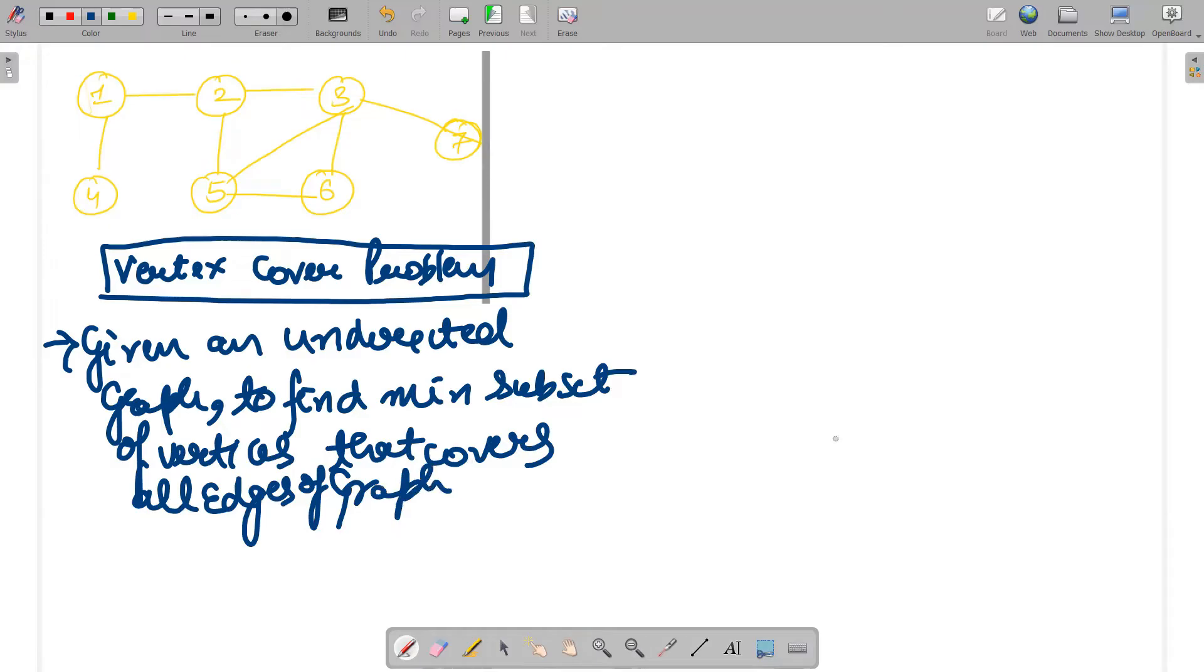So it means that what are the vertices which are contributing maximum in a graph? Let's say, if I talk about vertex 1, so 1 is connected to 2 as well as 4. So this is having 2 connections, right?